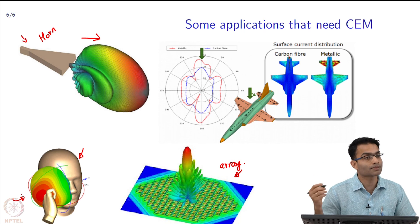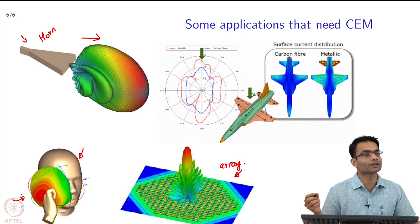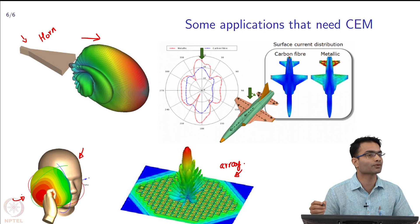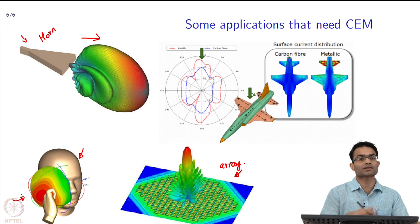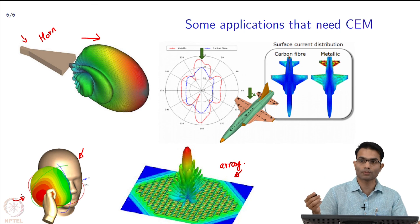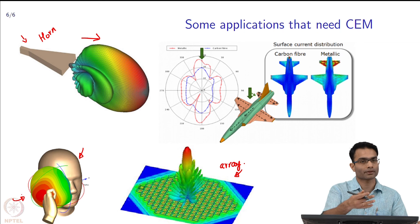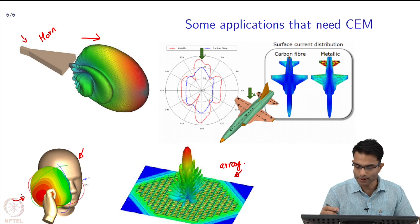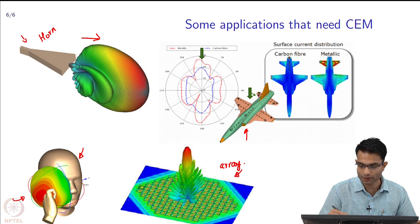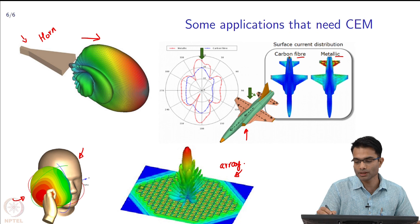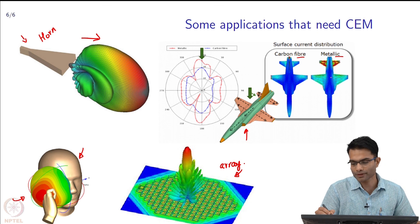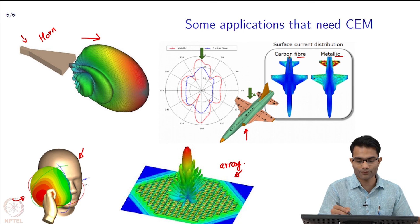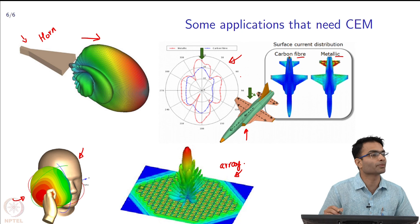Then there are large amounts of military applications. When computational EM started in the 60s, one of the major driving forces were military applications - you want to make a stealth aircraft, it should not be detectable by radar. If you know that is the goal, but how do I make sure that it is not detectable? I simulate and show that the radar cross section is less or more. In this simple example what they have done is they have taken an aircraft and either made it out of carbon fiber or a metallic frame and this simulation is showing you the electric fields on the surface. They are different and therefore the radar cross section is going to be different.